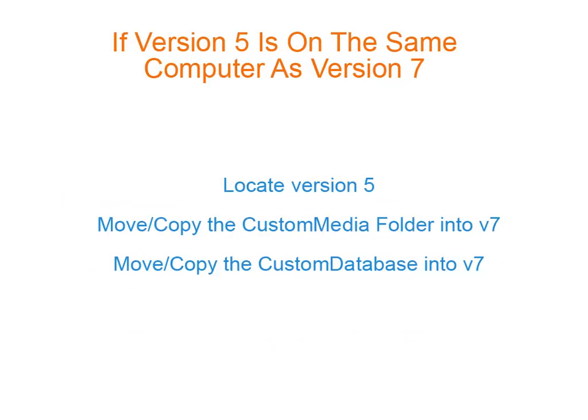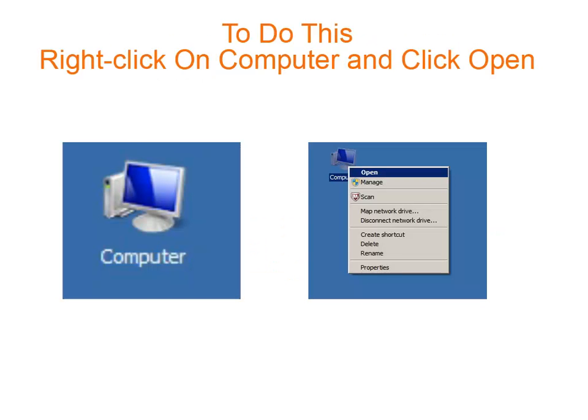If version 5 is installed on the same computer as version 7, we just need to move the custom media and custom database files from version 5 into version 7. To do this, we need to go into the C drive on your computer and move a few files.